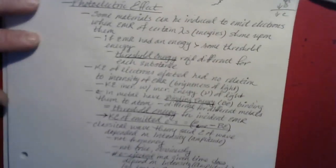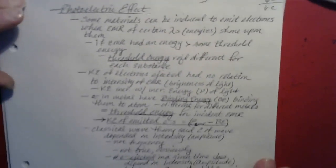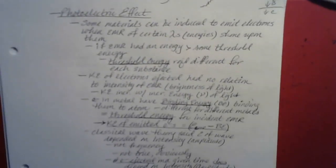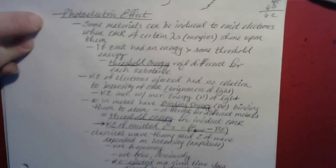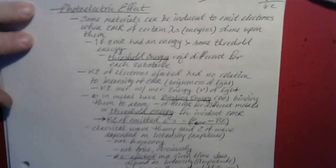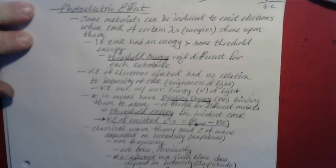We begin segment C with the photoelectric effect. The phenomena we have investigated so far point in the direction of light or electromagnetic radiation existing in the form of waves. The photoelectric effect is interesting because it was really the first phenomenon observed that pointed in the direction of light existing as a particle, instead of a wave.